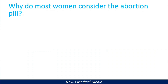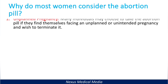Abortion is a very controversial topic especially in developing countries, but women are always thinking about it. So what could be the reason behind it? The first reason is unplanned pregnancy. Many individuals may choose to take the abortion pill if they find themselves facing an unplanned or unintended pregnancy and wish to terminate it.